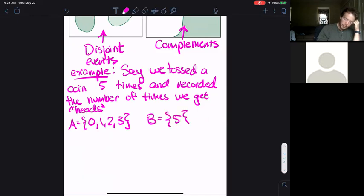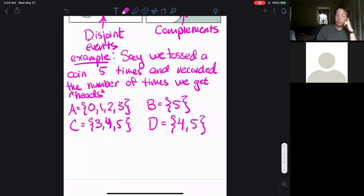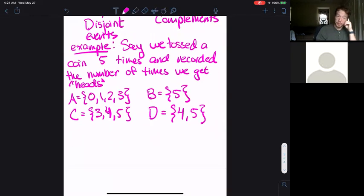I'll call event C, we get heads three, four, or five times. And event D, we get heads four times or five times.